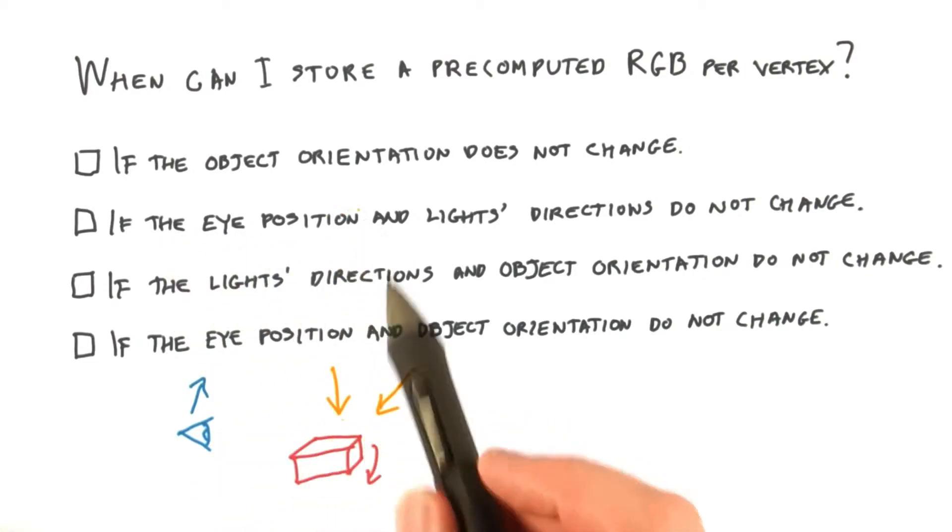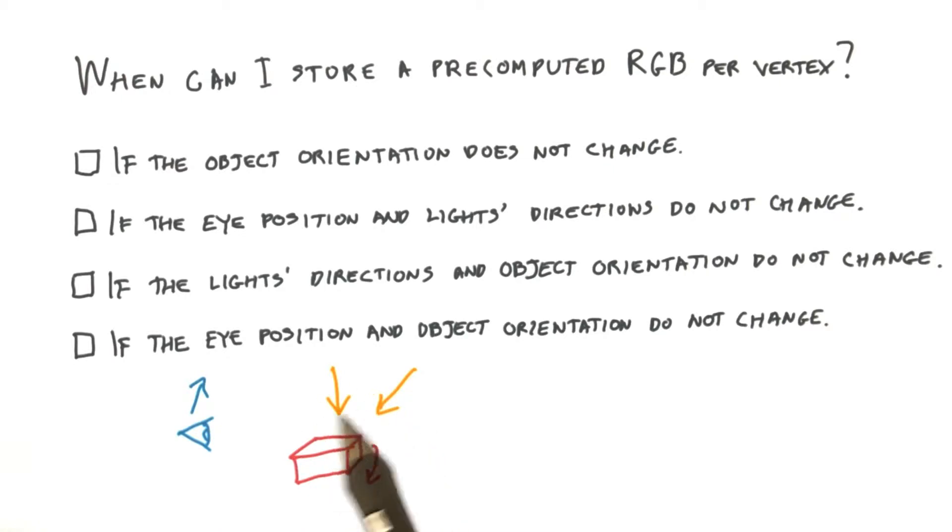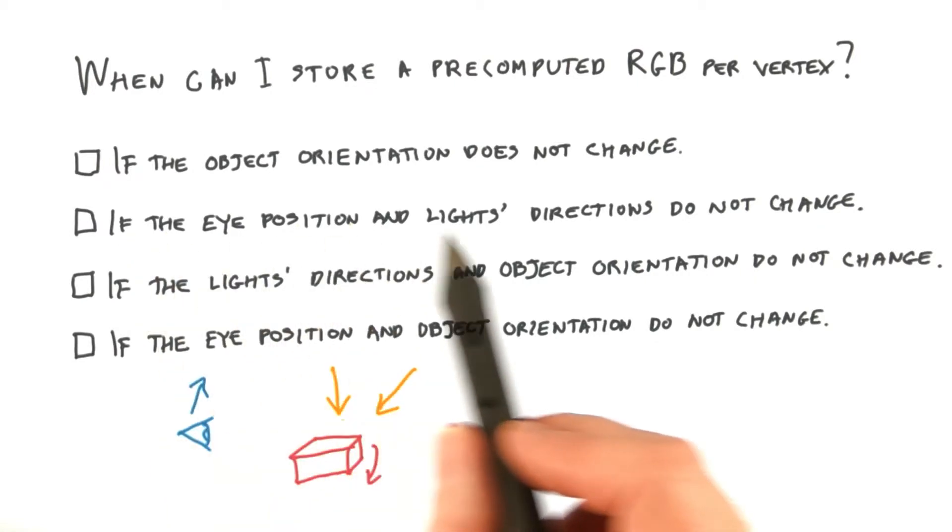This second answer locks down the eye position and the light's directions. Now, the lights cannot move, but the object could rotate in space. If it does, the directions of its normals compared to each light will change, which changes the diffuse calculation. So, this answer won't work.